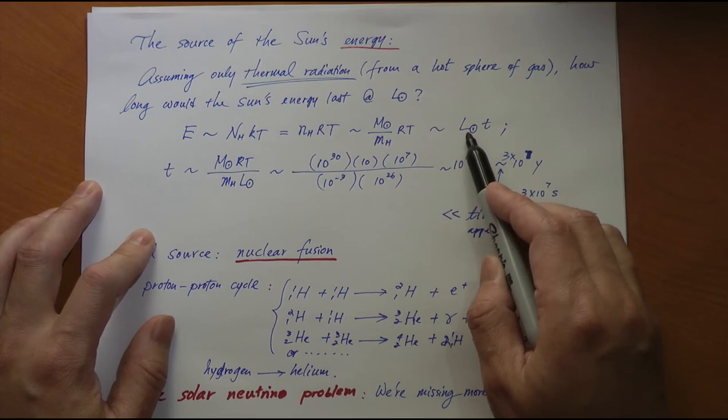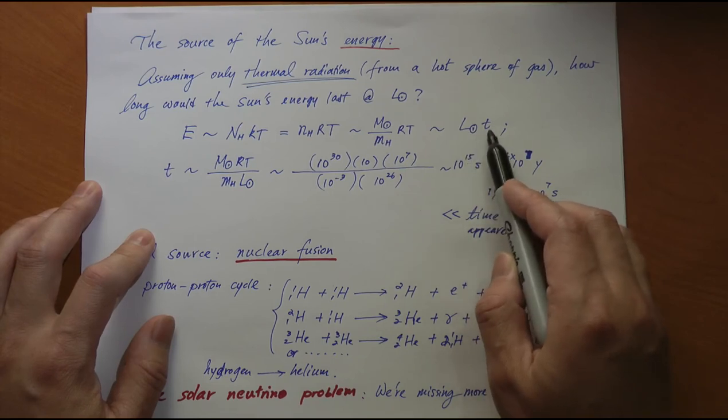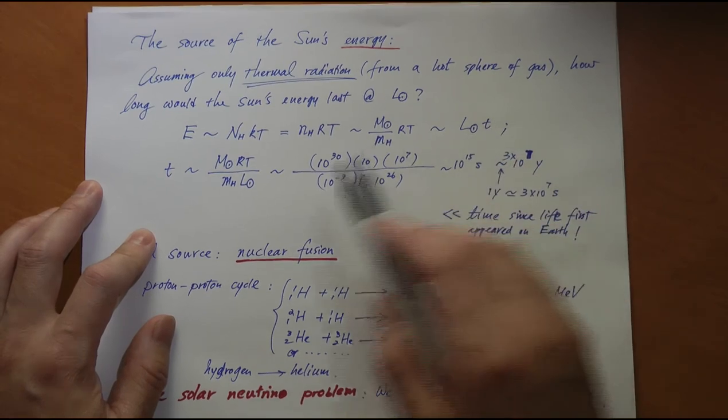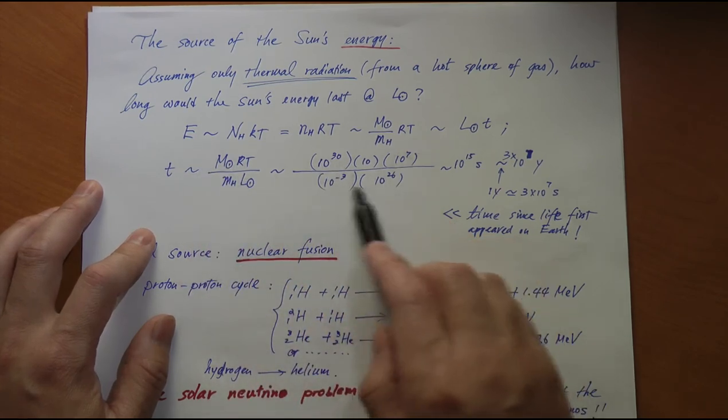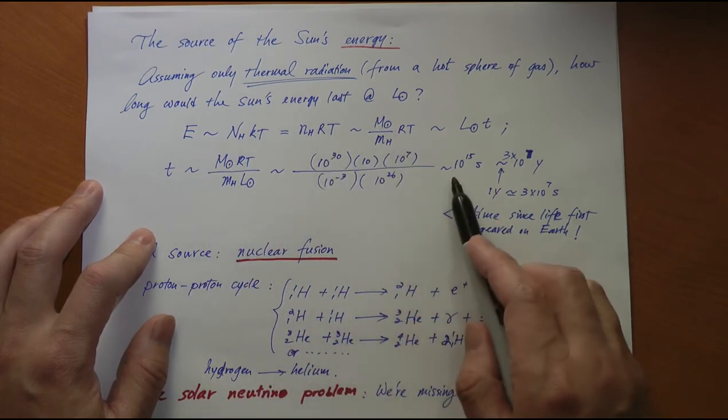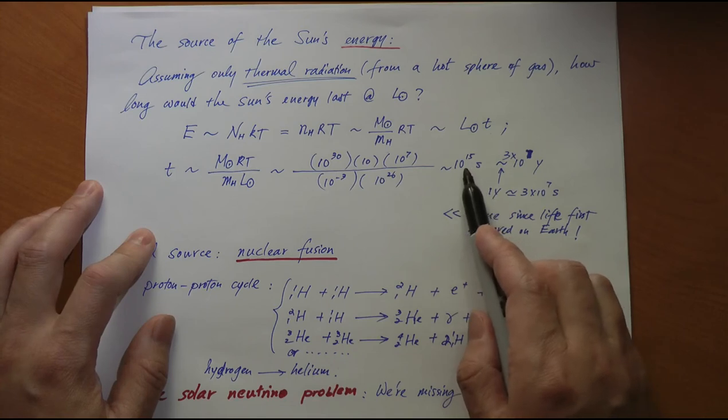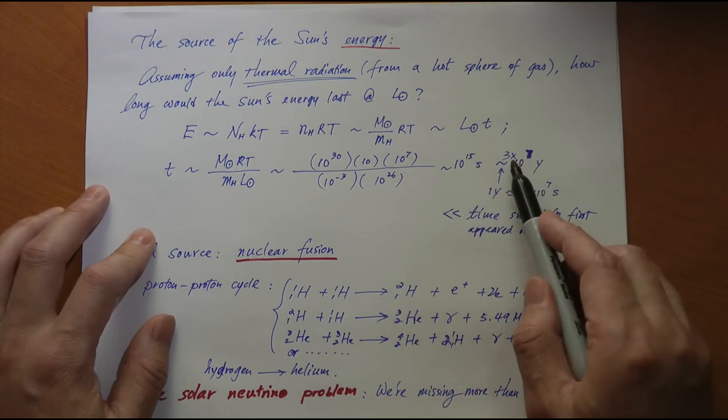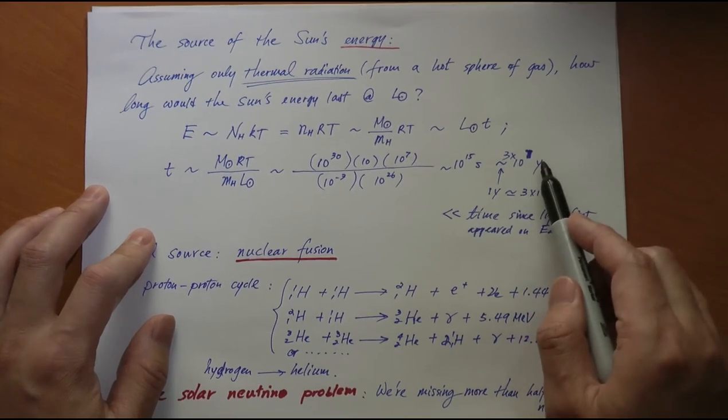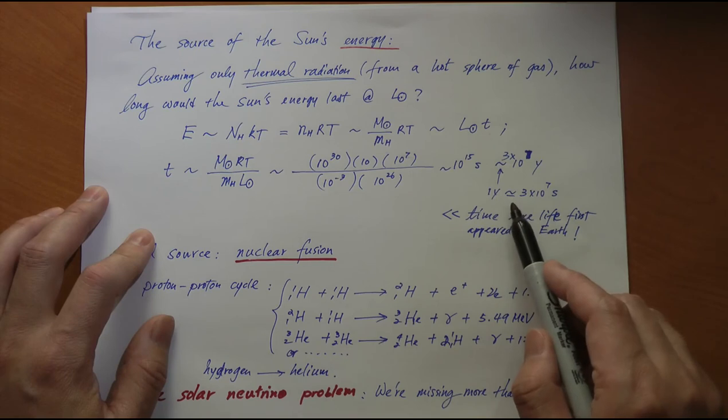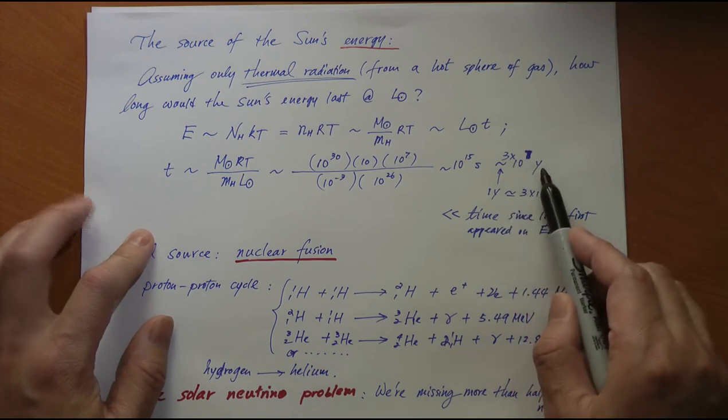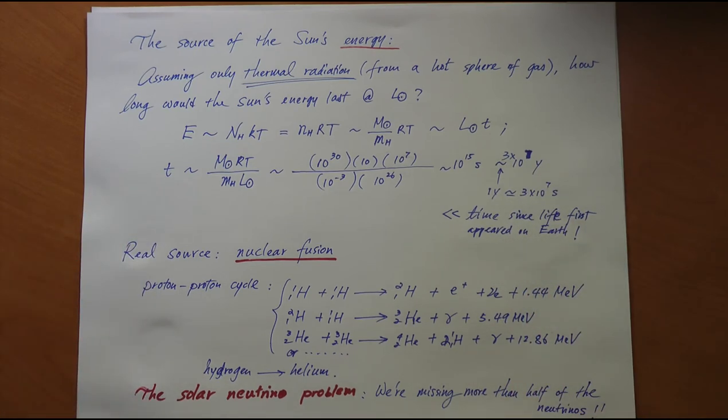That will give you the age of the sun, how long this luminosity is going to last. If you did this calculation only in order of magnitude, you'll find it's 10^15 seconds. Each year is about 3 times 10^7 seconds, so that translates to about 3 times 10^7 years, 30 million years, which is nothing.